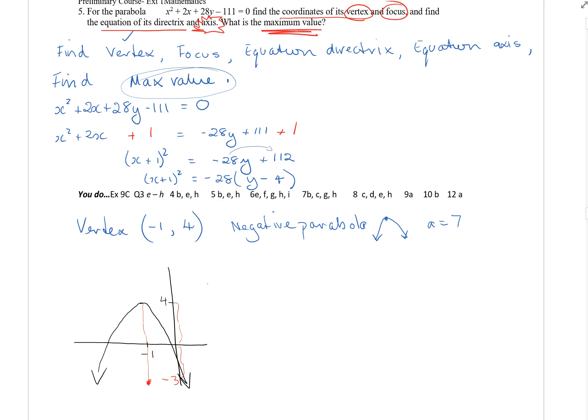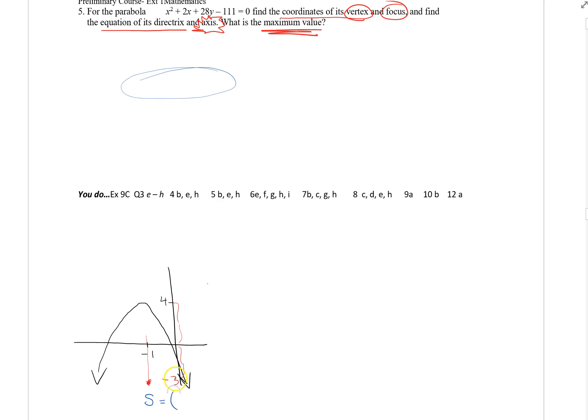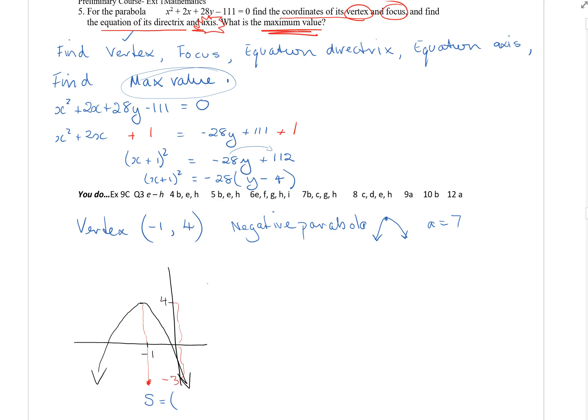So that much is 4. Obviously I'd need to come down to negative 3 for y. So I can see at this stage that's my focus. My focus is at minus 1, minus 3. X minus 1, y value minus 3.